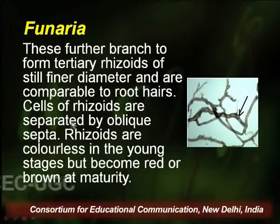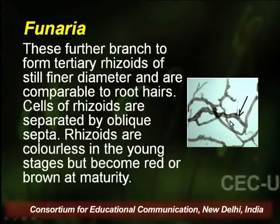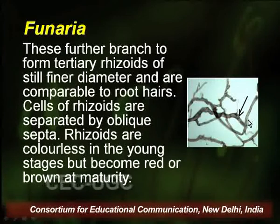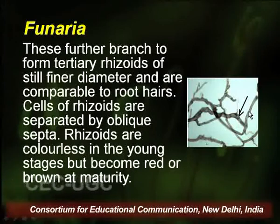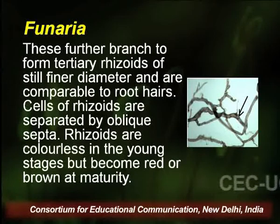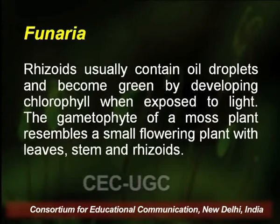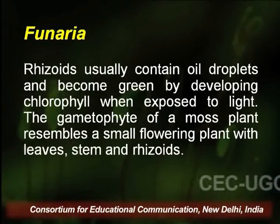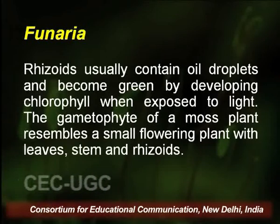The cells of rhizoids are separated by oblique septa, visible in the diagram showing multiple oblique septa in primary and secondary rhizoid cells. These rhizoids are colorless when young but become red or brown at maturity due to the deposition of pigments.